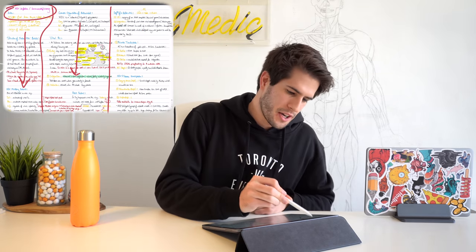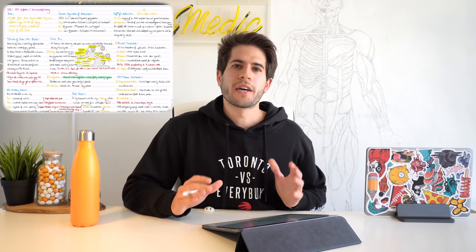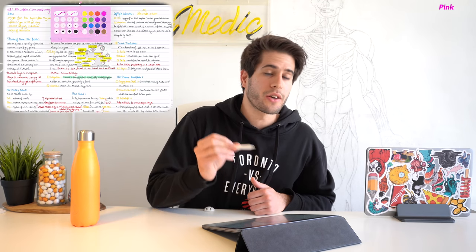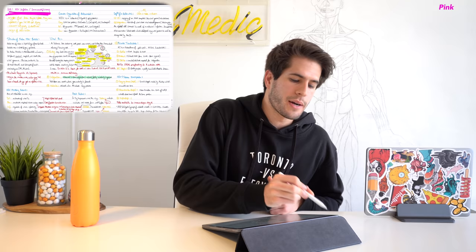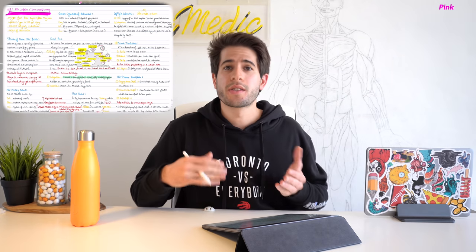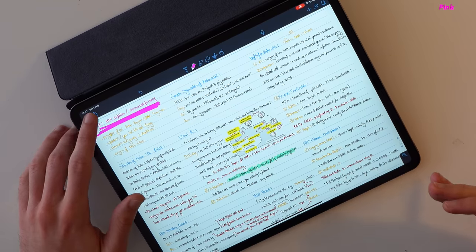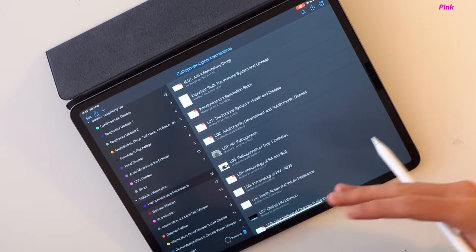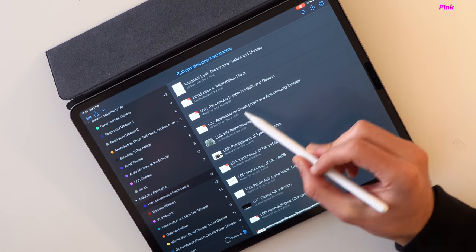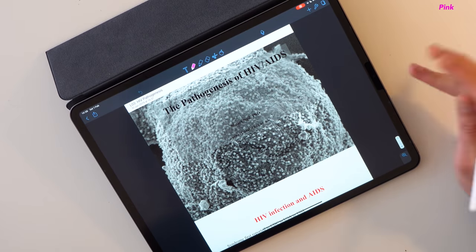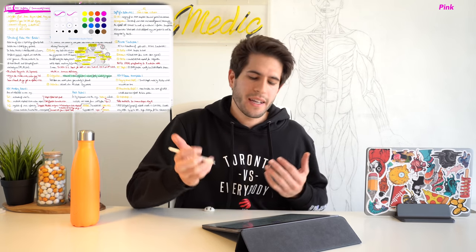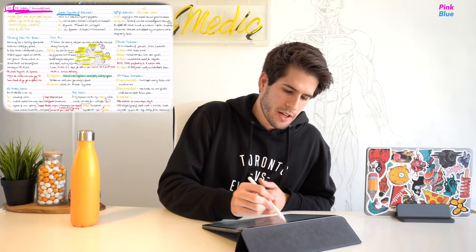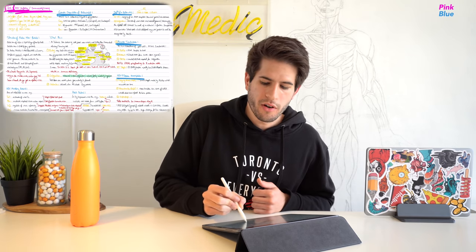Starting with bright pink — I always and only use it to write the title of the lecture. The title is always in the top left of the page and it is numbered, and that number corresponds to a specific lecture within the same subject. For example, that lecture was lecture 03 — HIV pathogenesis. The next thing I do is write all of the lecture headings or subtitles in this light blue color, which you can see here — these are all the subtitles of the lecture.